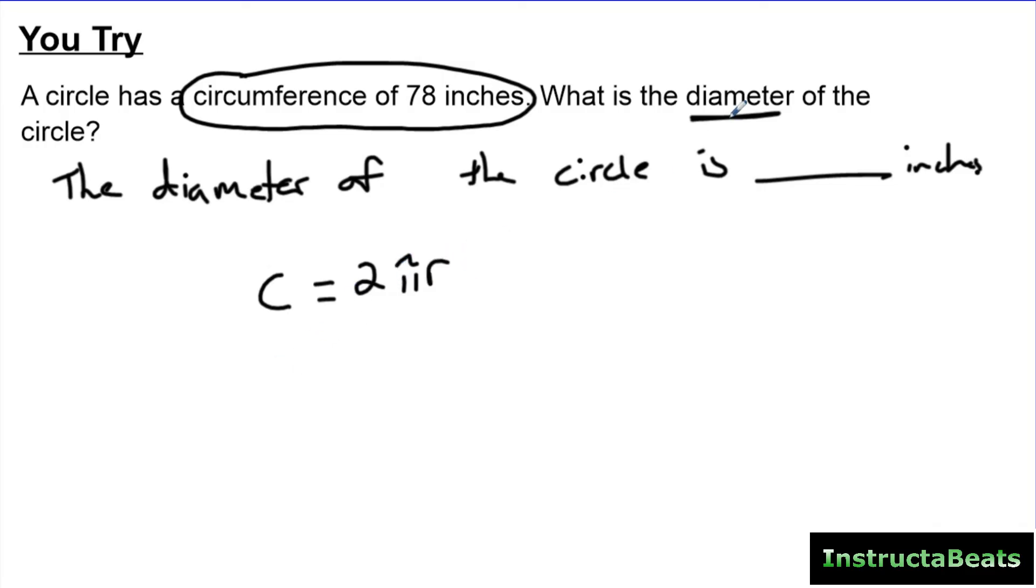Now, I have a diameter here. So there's two different ways to do this. You could either substitute this formula and make it pi times diameter, because 2r is the same thing as the diameter, or solve for r, and then just multiply times two. Either one's going to work. Either one, you got to plug in 78 here.